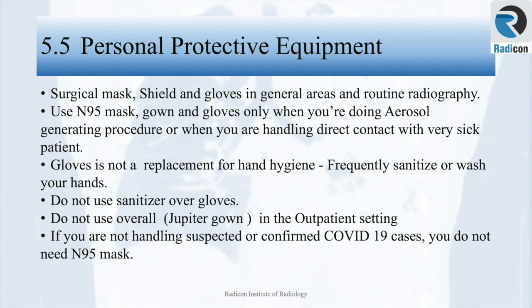PPE has been one of the most debated topics among health professionals during the COVID pandemic. Availability of PPE and staff protection is absolutely essential. Worldwide shortage has resulted in suboptimal working environments. Recommended practice includes surgical masks, shield, and gloves in general areas and routine radiography. Use N95 mask, gown, and gloves only when performing aerosol-generating procedures or handling direct contact with sick COVID patients. Gloves are not a replacement for hand hygiene — sanitize or wash hands frequently. Do not use sanitizer on gloves. If you are not handling suspected or confirmed COVID-19 cases, you do not need an N95 mask.